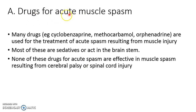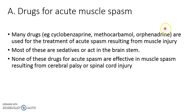The drugs used for acute muscle spasm include cyclobenzaprine, methocarbamol, and orphenadrine, all used for treatment of acute spasm resulting from muscle injury. Cyclobenzaprine and methocarbamol may not be used in Malaysia, but orphenadrine definitely is. You should know about orphenadrine, as it is commonly used in the emergency ward, in psychiatry, in pediatrics, and in medicine.